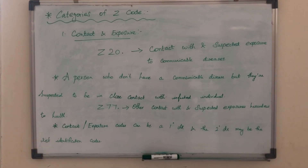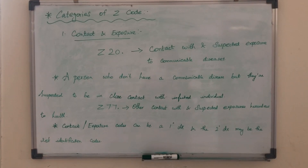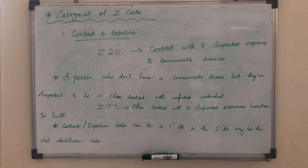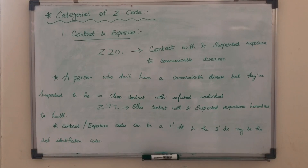For other contact with and suspected exposure to hazardous substances to health, we use the Z-77 category codes. In the contact or exposure codes, we use primary diagnosis. In the secondary diagnosis, we use risk identification codes.